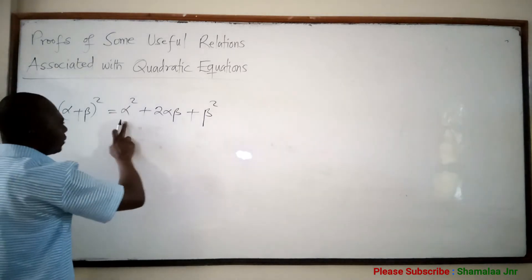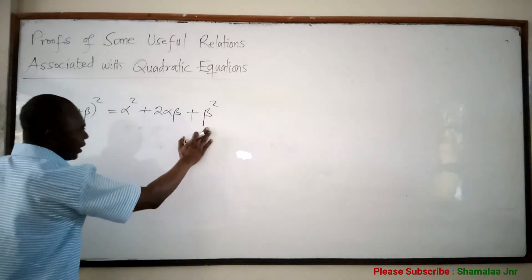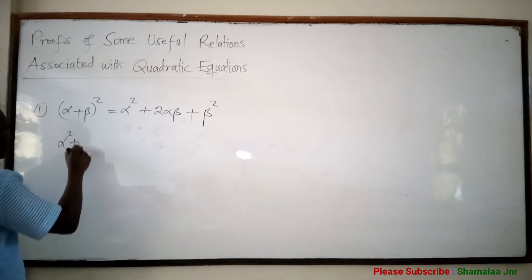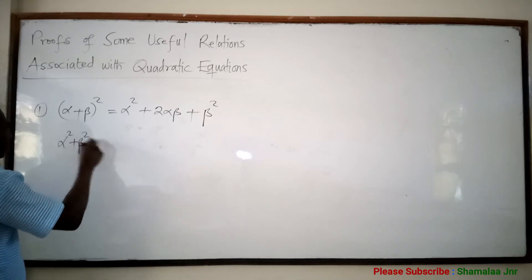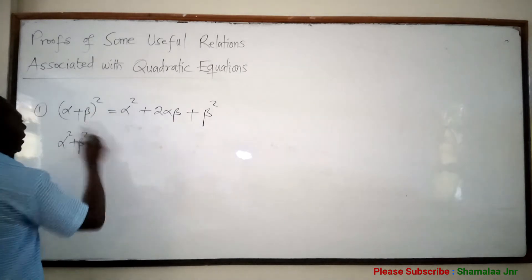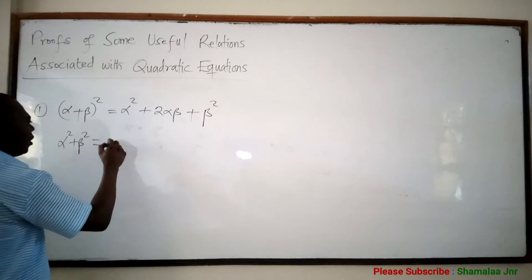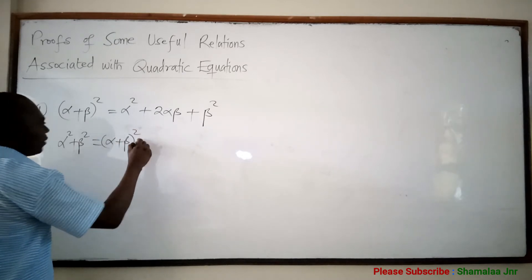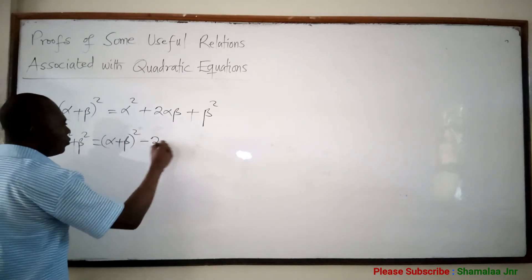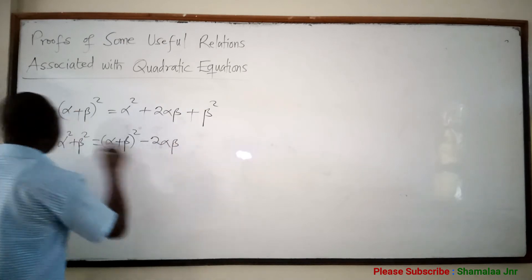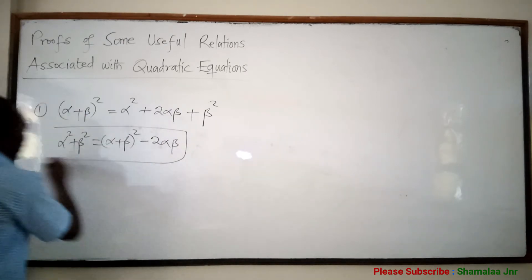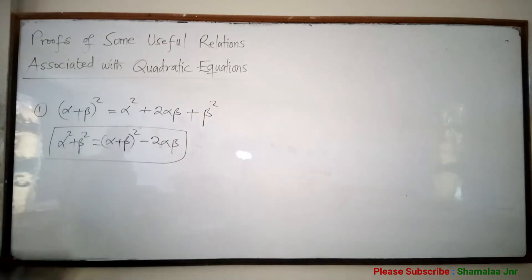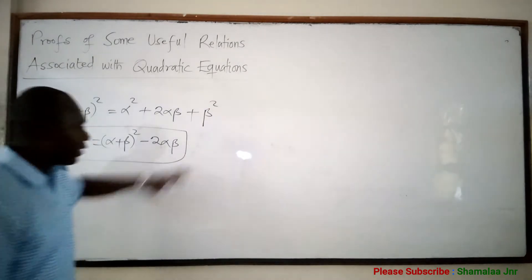Now viewers, if you decide to make alpha squared plus beta squared the subject, then it is going to be alpha squared plus beta squared equals alpha plus beta all squared minus two alpha beta. So this is one of the useful relations associated with quadratic equations.